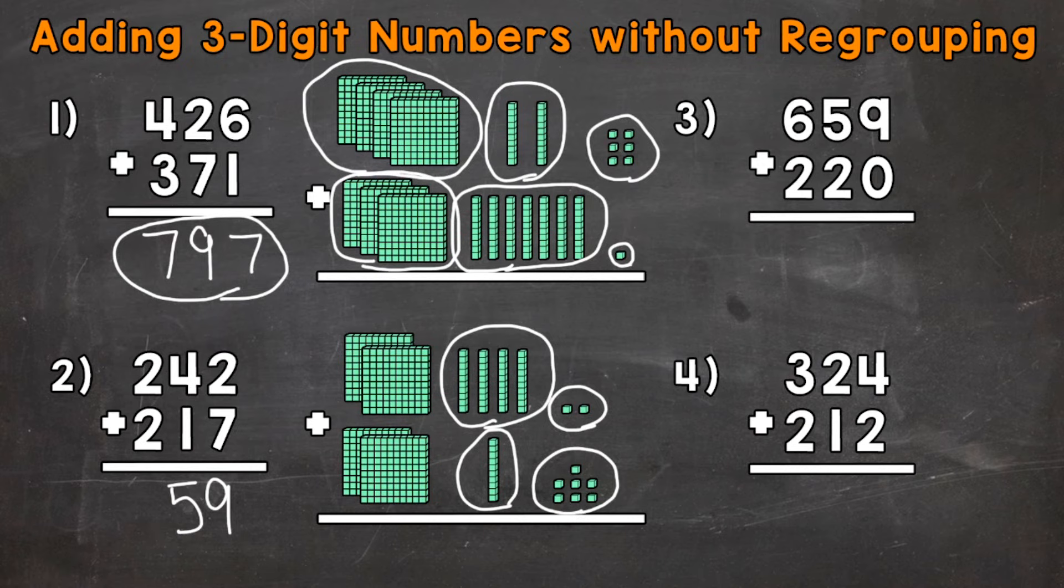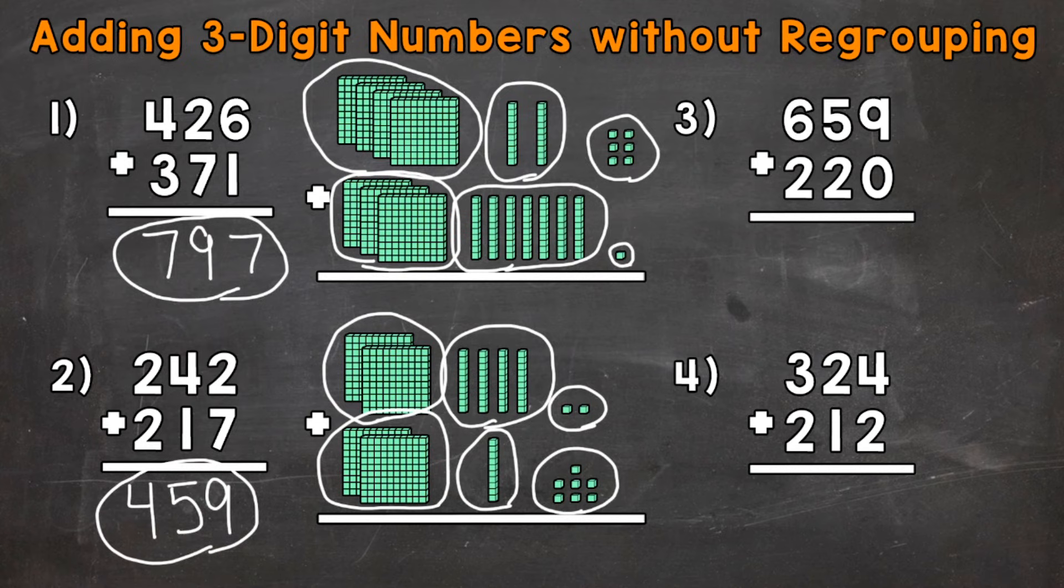And then lastly, the hundreds place. So 2 groups of 100, which has a value of 200, plus another 2 groups of 100, which has a value of 200. So that 2 plus 2 gives us a 4, which represents 4 groups of 100, and has a value of 400. So our final answer, 459.